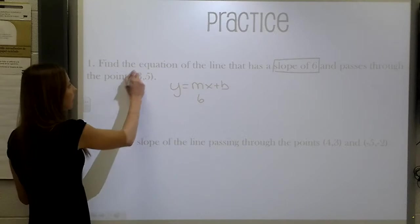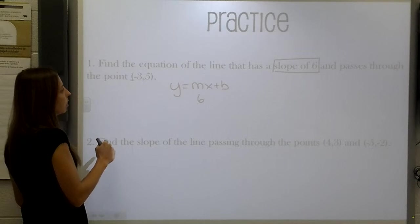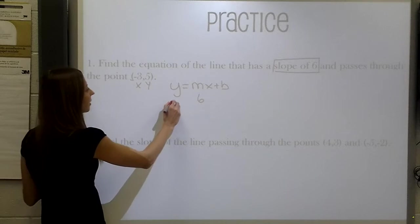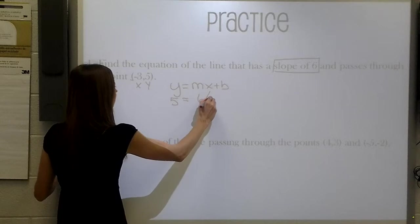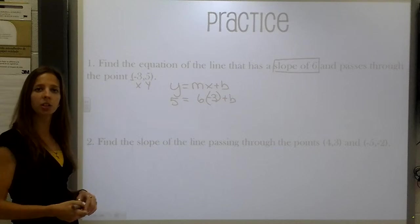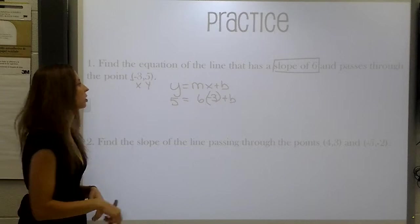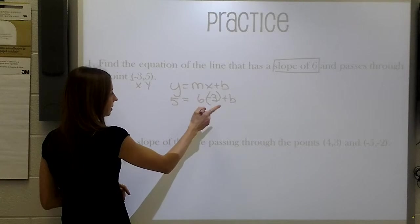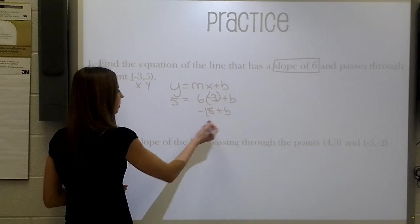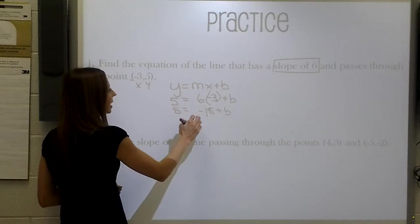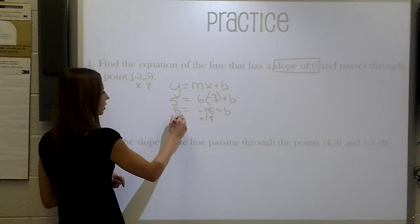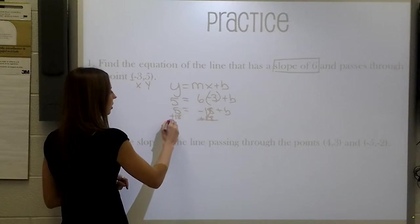And they've given us one coordinate point, so we now know that we can plug in negative 3 as our x and 5 as our y. At this point, we're just going to use basic algebra to solve this equation. 6 times negative 3 will give us a negative 18 plus b. Now we must combine like terms, so we will add 18 on both sides of the equation. These will cancel out.